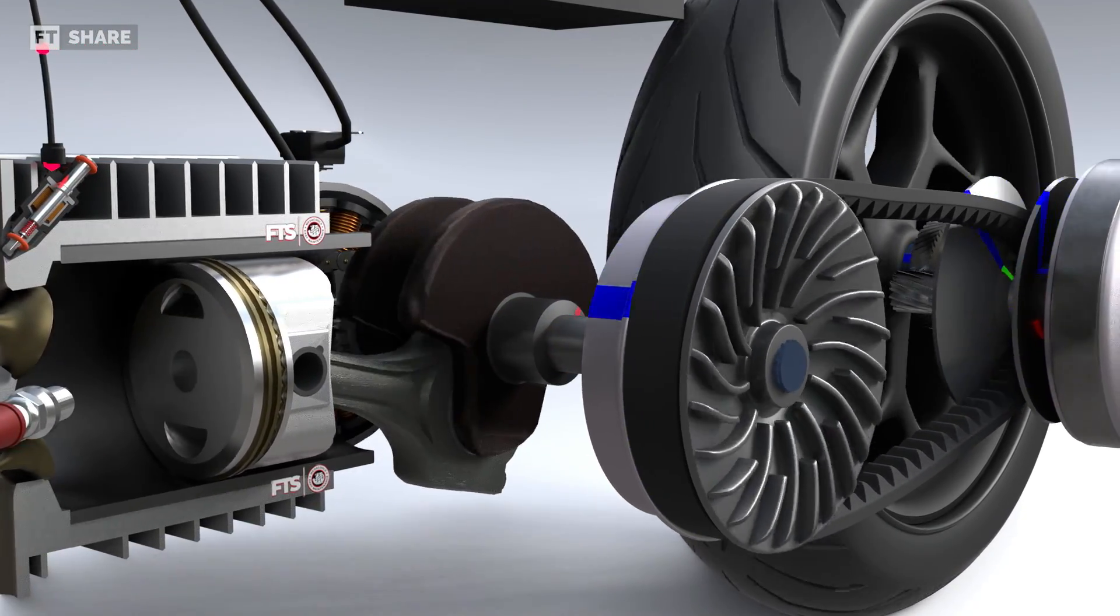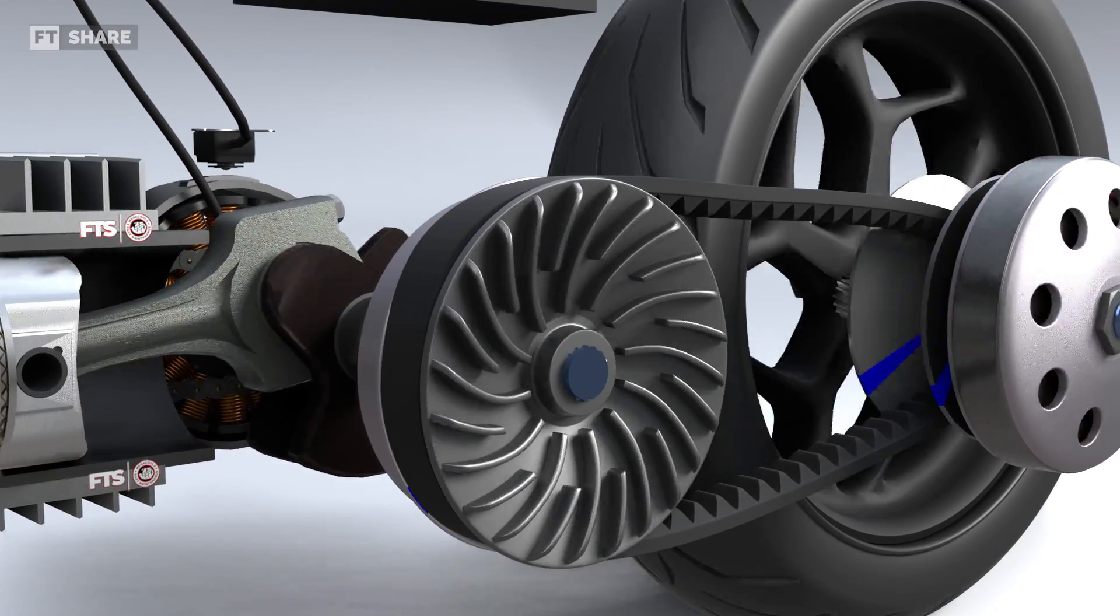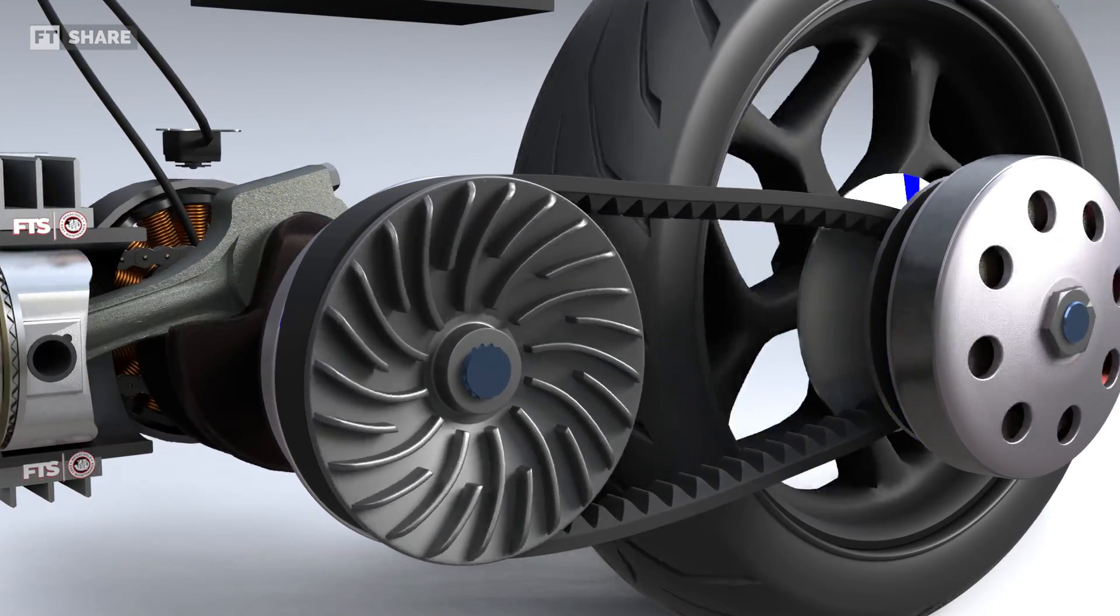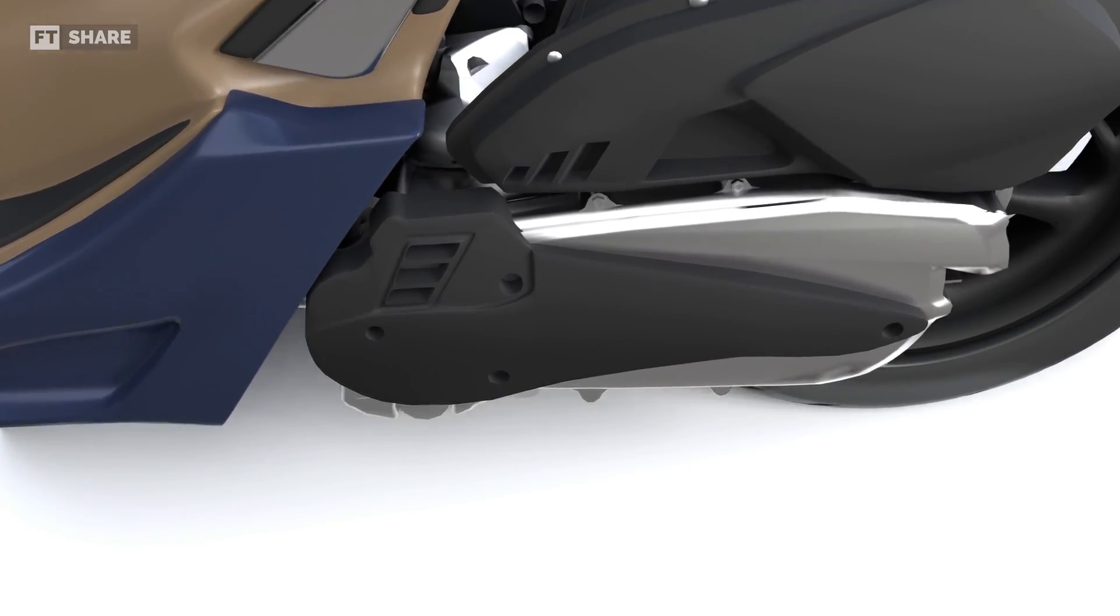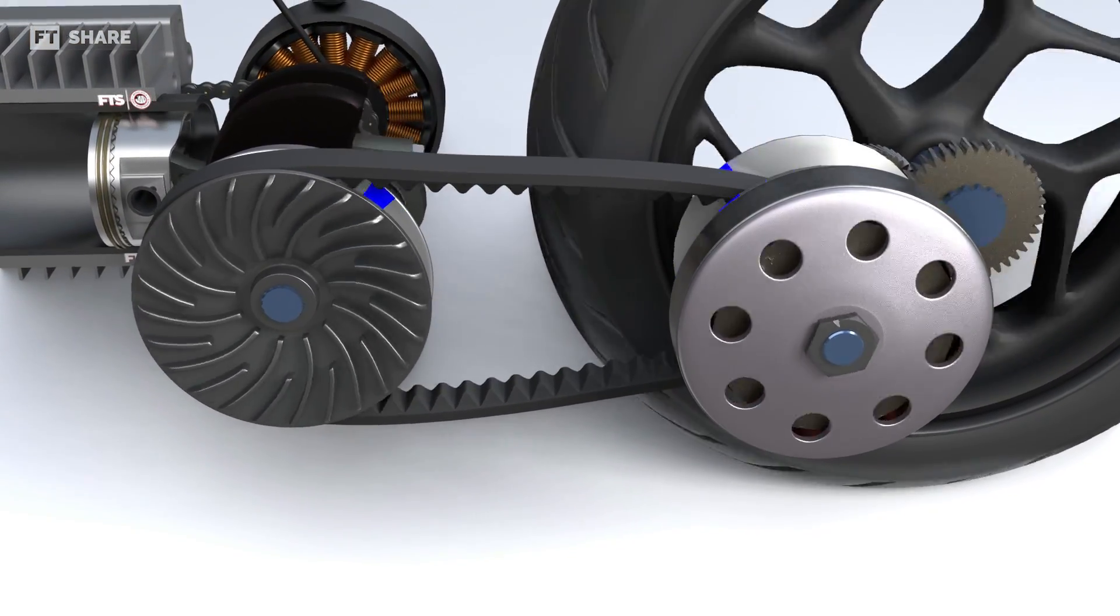CVT is a very common and popular transmission system worldwide due to its practicality, and as a result, we often see it used in scooters. Without further ado, let's take a closer look at how it works and all of its parts for a better understanding.